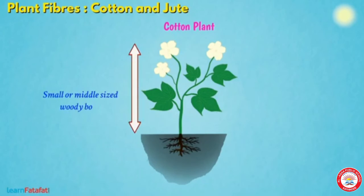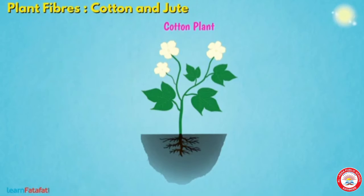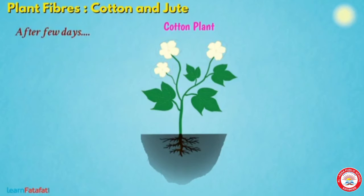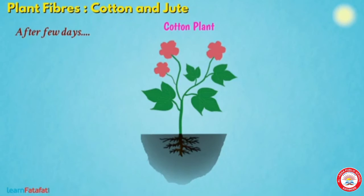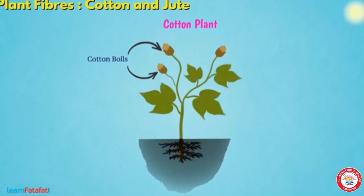This cotton plant is small or middle-sized with a woody body, so it is classified as a shrub or bush. Its flower is yellowish-white in color and after a few days it will change its color to pink. Then this flower will change to cotton balls, which are actually green in color. The roots of the cotton plant are about the size of a lemon.